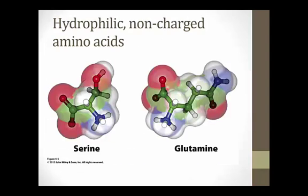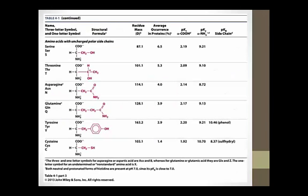Our next category comprises amino acids that are hydrophilic but carry no formal charge, such as serine and glutamine. As seen in Table 4-1, serine and threonine both contain hydroxyl groups. Asparagine and glutamine have amide-bearing R groups. Tyrosine has an aromatic phenolic group. And cysteine has a thiol group capable of forming a disulfide bridge with other cysteines — we'll come back to this in a little bit.